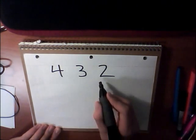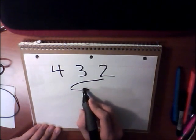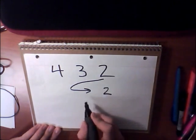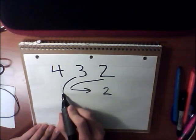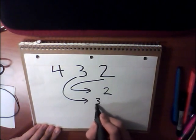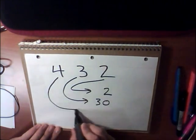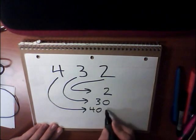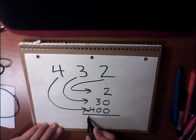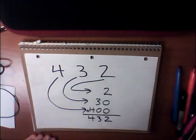Take the number 432. We know that this simply isn't 4 plus 3 plus 2, and we know that the placement of digits decides what its value is. So, as we can see, 2 is 2, 3 is 30, 4 is 400, and we add it up, we get 432.